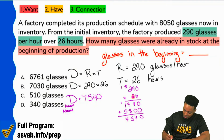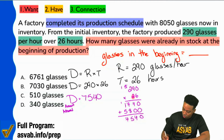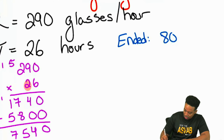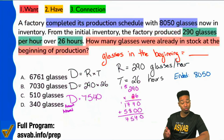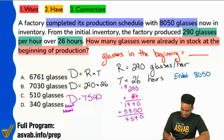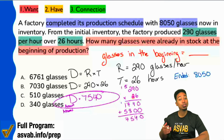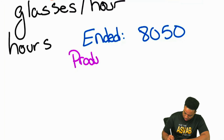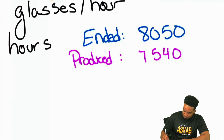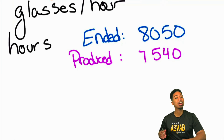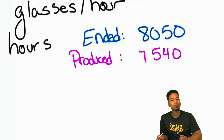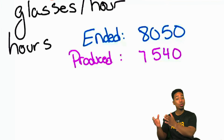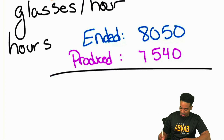We see right over here: it says the factory completed the production schedule with 8,050 glasses. So we ended with 8,050 glasses. And we noted that we produced 7,540. So how do we find how many we began with? The simple operation we'll take — and you already got it in the chat box — we'll be subtracting. If we have what we ended with and what we produced, we can subtract to get what we started off with.